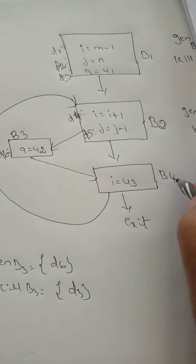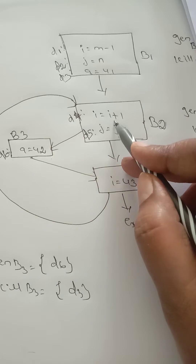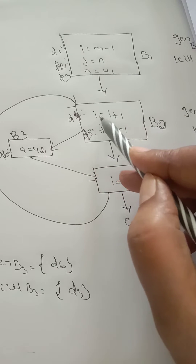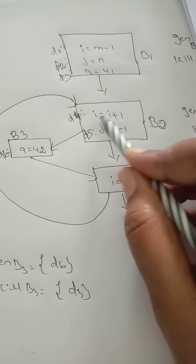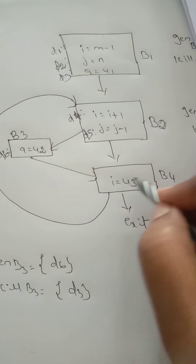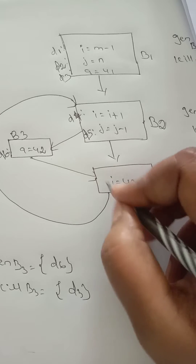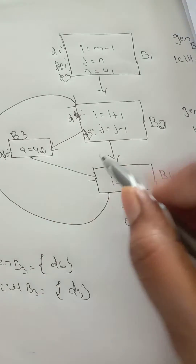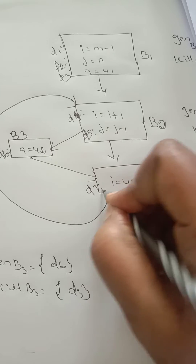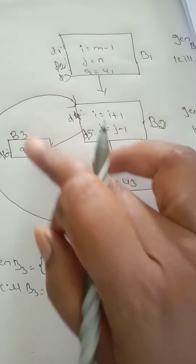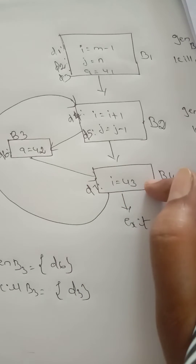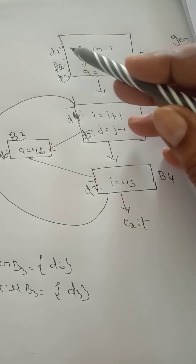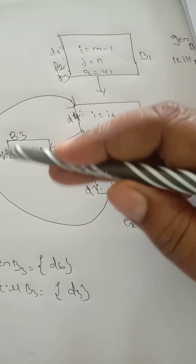Coming to block four, i equal to u3. Previously i equal to m minus one, then after incrementing i becomes m. Now i equal to u3 is a different data again, so we assign data seven (D7). Like that we assign data numbers D1 through D7 to all statements across the four blocks.